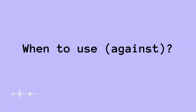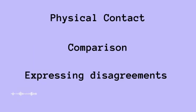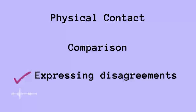Let's look at the first part of this video: when to use 'against'. You need to use this preposition to speak about physical contact — that's number one. Number two is comparison, like when you need to compare between two things. And then there's expressing disagreements.